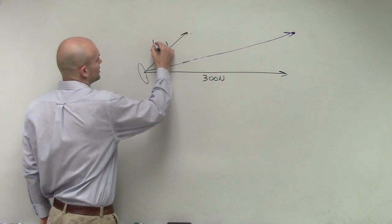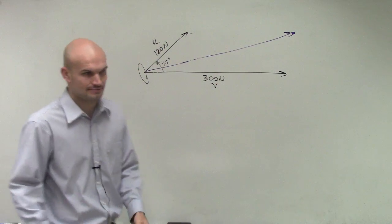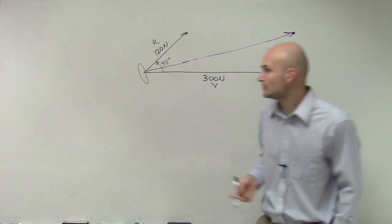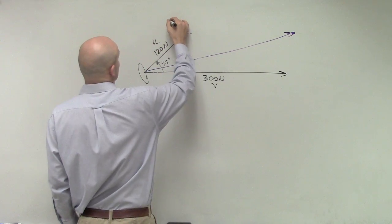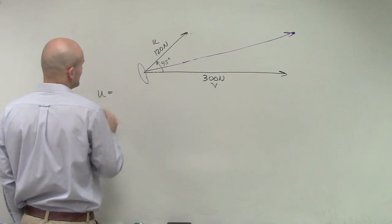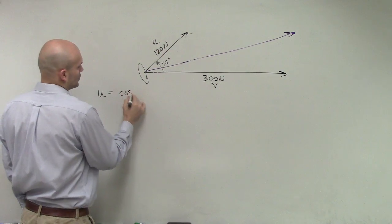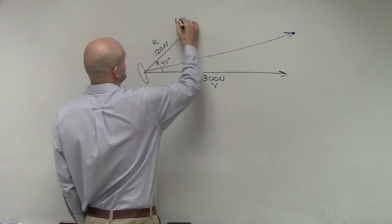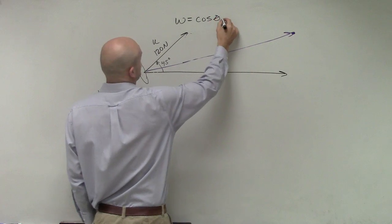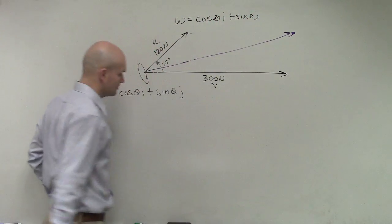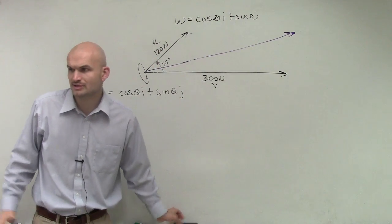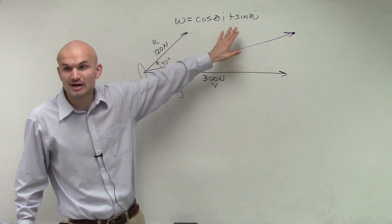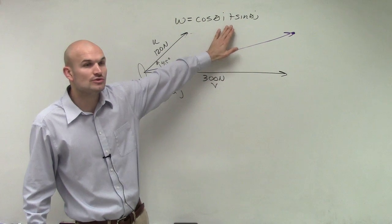So what we need to do is determine the direction and magnitude for each one of these forces. I'm going to give them a name — I'll call this vector u and this vector v. Last class, we talked about how we can describe vectors as linear combinations in terms of their angles. We said u can be rewritten as cosine of theta i plus sine of theta j. Remember the unit circle — x was cosine, y was sine — so we can create a linear combination to find the direction of a vector.